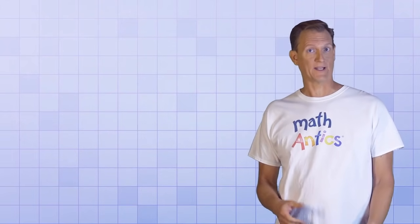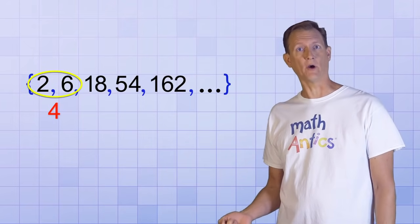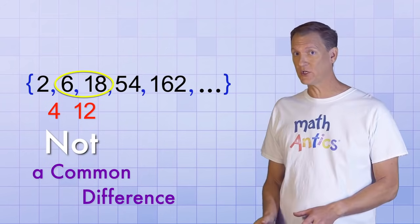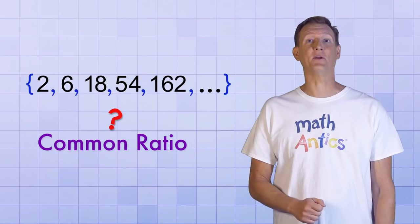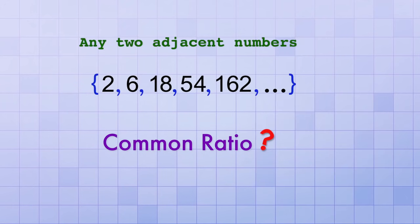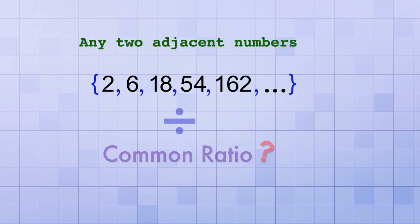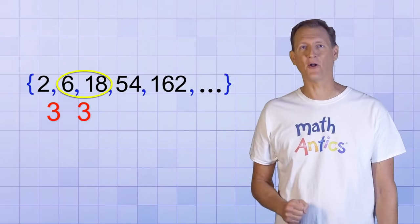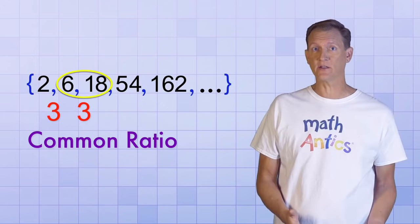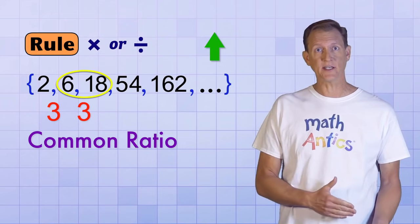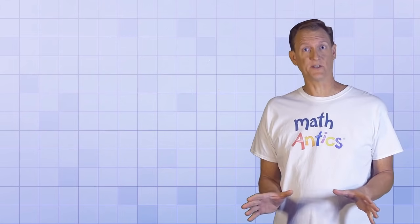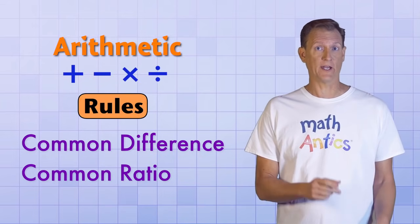But what if there's no common difference? Then try finding a common ratio by dividing adjacent pairs instead of subtracting. For example, 6 divided by 2 equals 3, and 18 divided by 6 also equals 3 — that's a common ratio, meaning the sequence is likely based on a multiplication or division rule. Since this is an increasing sequence, the rule is probably multiply by 3. So even though not all sequences are based on simple arithmetic rules, checking for a common difference or a common ratio can help you identify the ones that are.